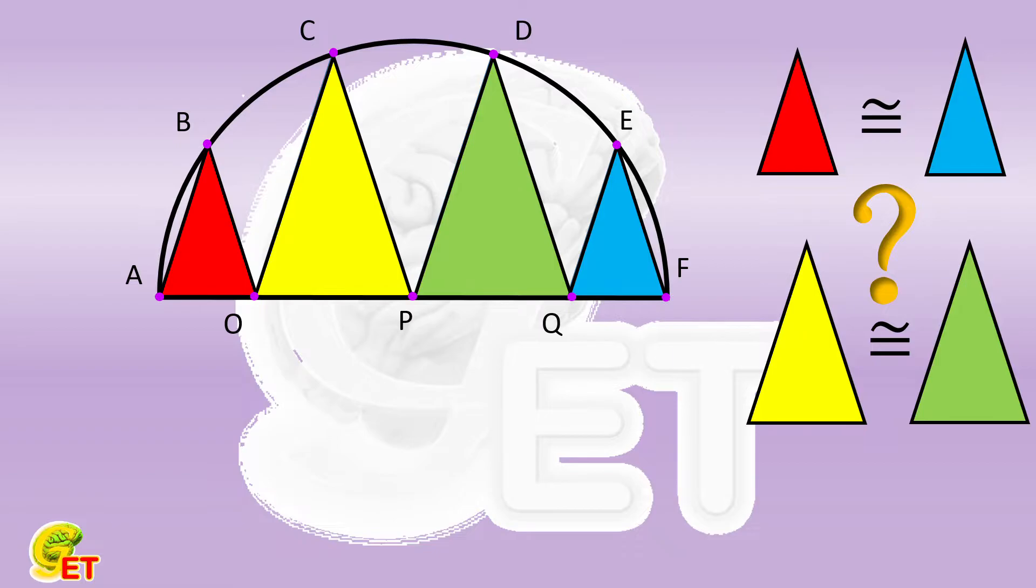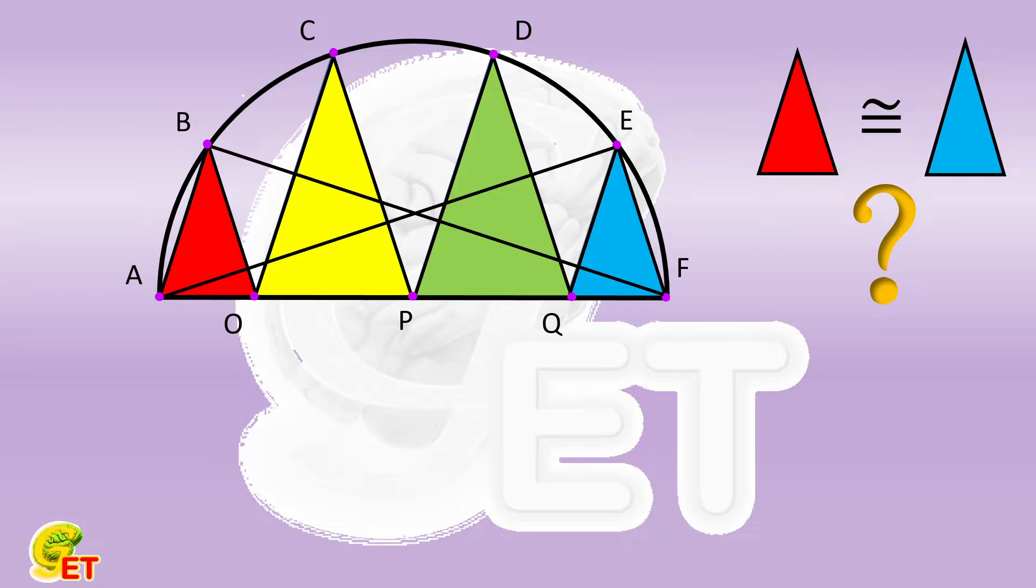First, let's prove that the red and blue triangles are congruent. To do this, we connect B, F, and E, A, respectively. Since A, F is the diameter, angle ABF and angle FEA are right angles.